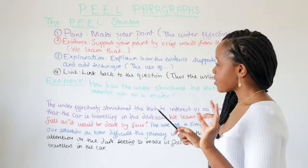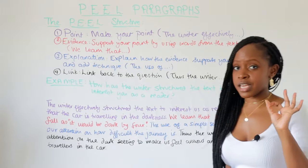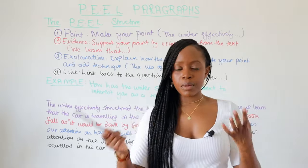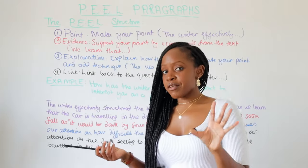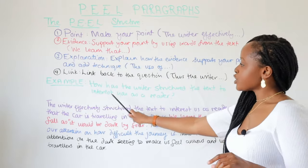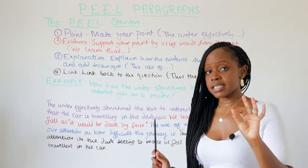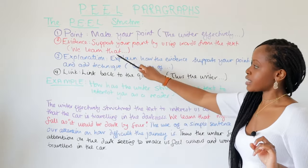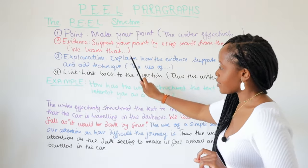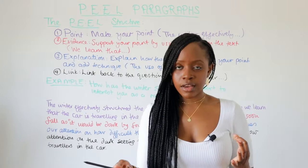Finally, the Link is linking back to the question. I would suggest beginning your link with 'Thus, the writer effectively...' using the keywords from the question. Here is an example from a past paper: 'How has the writer structured the text to interest you as a reader?' So: 'The writer effectively' for your Point, 'We learn that' for your Evidence, 'The use of' for your Explanation, and 'Thus the writer' for your Link.